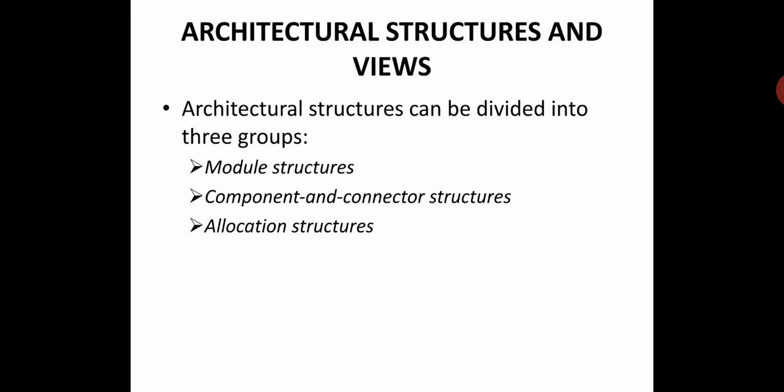Coming to the component and connector structures, the elements are considered as runtime components. Runtime components are the principal units of computation — the units which are computing during runtime. The connections between those elements will also be specified. The connections are used to provide the data flow from one element to the other. In module structure, elements are modules; in component and connector structures, the elements are runtime components. Connectors are the communication vehicles among the components.